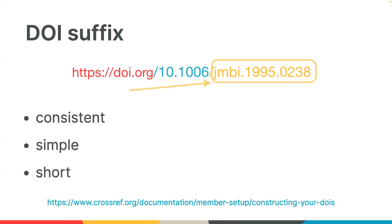DOI suffixes: we receive a lot of questions, especially from new members, about creating suffixes. A DOI is meant to be an opaque identifier — the DOI itself doesn't necessarily have any meaning, and the suffix doesn't need to state anything about the item it's identifying. That's all done with the metadata you register with us. Our best advice is that your DOI suffixes should be consistent, simple, and short. Don't include any pattern that could change in the future. When creating your suffix, you can use letters A through Z, numbers zero through nine, and certain characters like hyphens or parentheses.